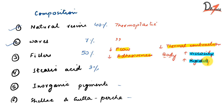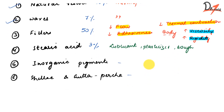Stearic acid acts as a lubricant, a plasticizer, and makes the material tougher - so it has three functions. The inorganic pigments provide color - brown, gray, or green. Shellac and gutta-percha improve the plasticity and workability of the compound.